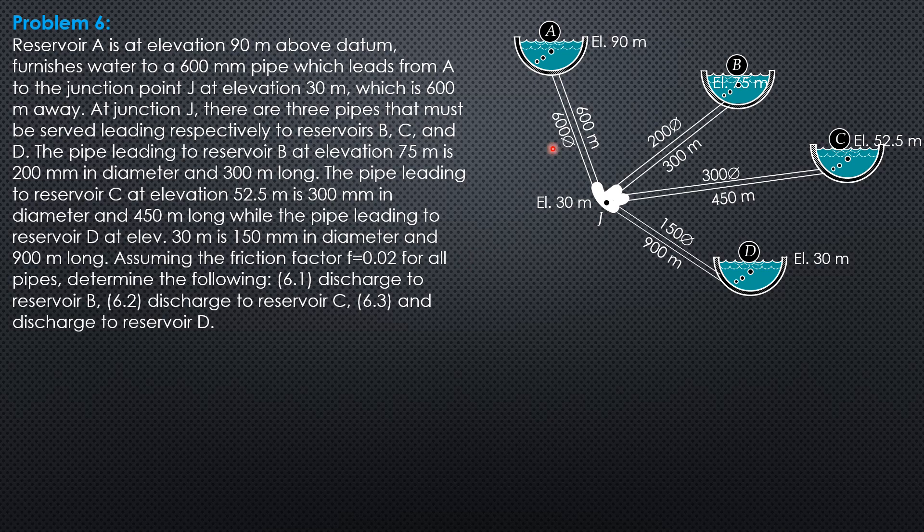It is clear in this problem that only A will supply all these three reservoirs, so the flow directions are as shown. The equation is Q1 equals Q2 plus Q3 plus Q4, where Q is square root of head loss diameter to the fifth over 0.0826FL from previous problem 5.